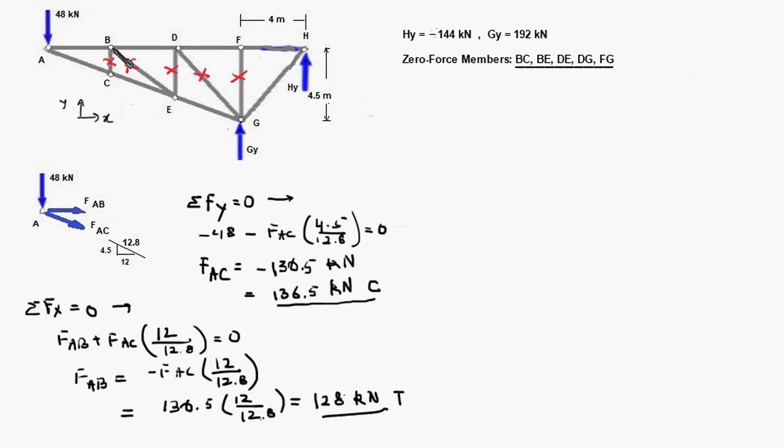And if we implement the same argument for joints B, D and F we will arrive at a conclusion that the internal force in AB will be same as what it is in BD, DF and FH that is it will be equal to 128 kilonewtons.